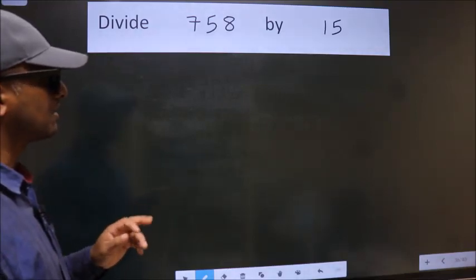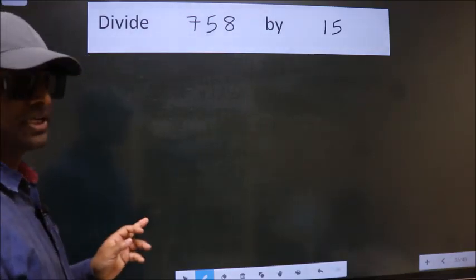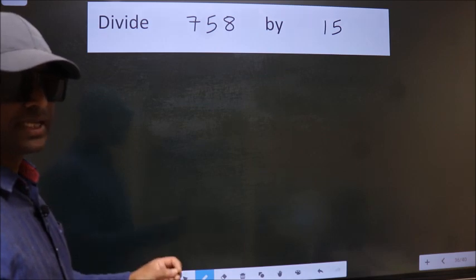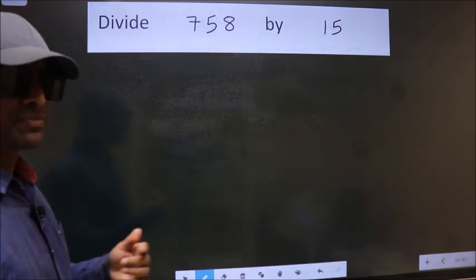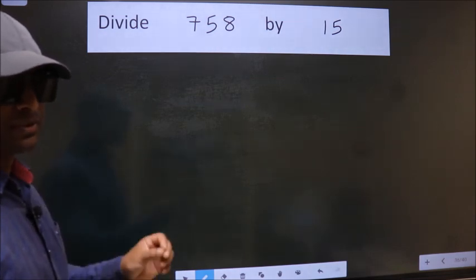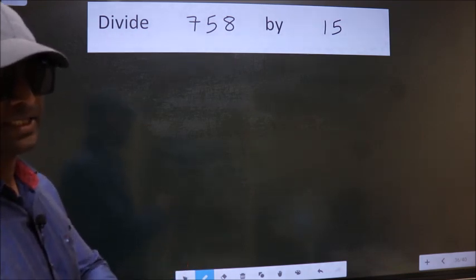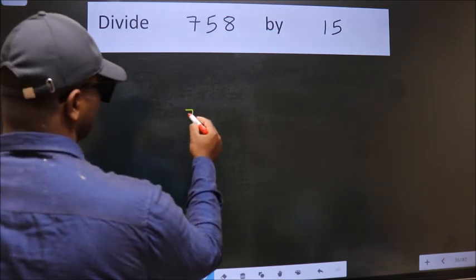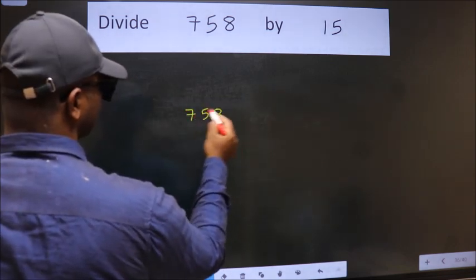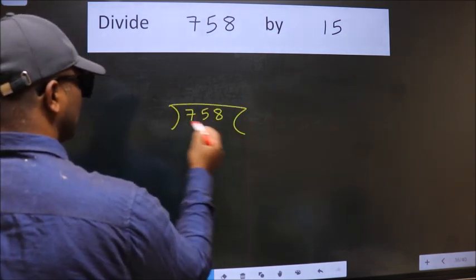Divide 758 by 15. While doing this division, many do this mistake. What is the mistake that they do? I will let you know, but before that we should frame it in this way: 758 here, 15 here.